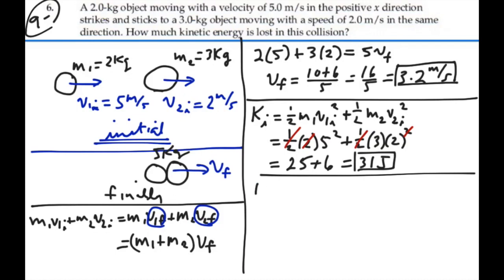Our final kinetic energy is 1 half our total mass, mass 1 plus mass 2, times our final velocity squared. So that's 1 half times 5 kilograms times 3.2 squared. And what is that? 25.6 joules.